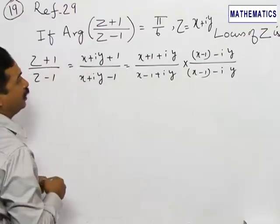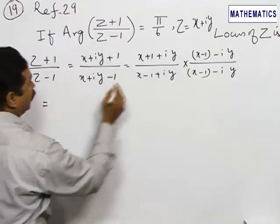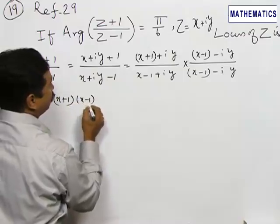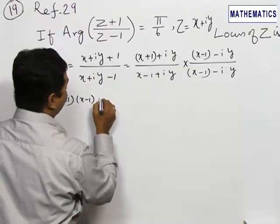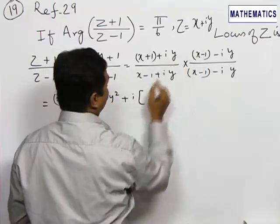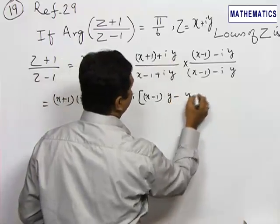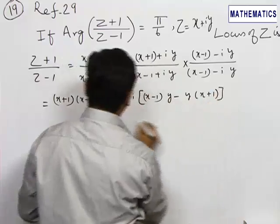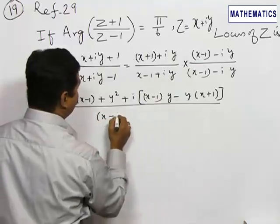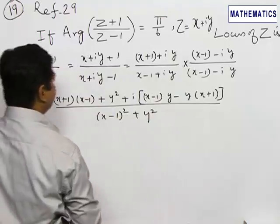Multiplying both numerators and denominators, we get: (x+1)(x-1) + y² for the real part, and (x-1)y - y(x+1) for the imaginary part. In the denominator, we have (x-1)² + y².